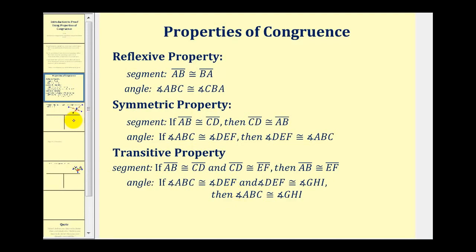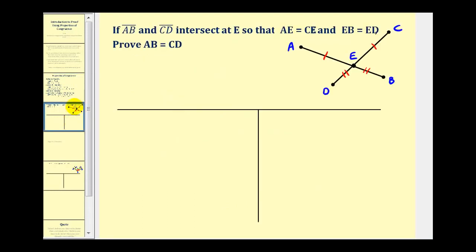Let's take a look at our first example. If segment AB and segment CD intersect at point E as we see here, so that AE is equal to CE (they both have one hash mark) and EB is equal to ED (these both have two hash marks), we want to prove that AB is equal to CD.